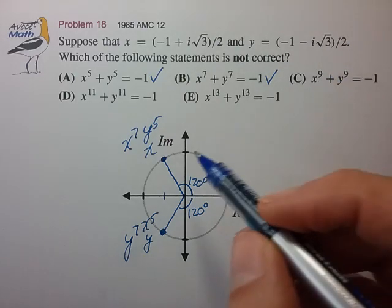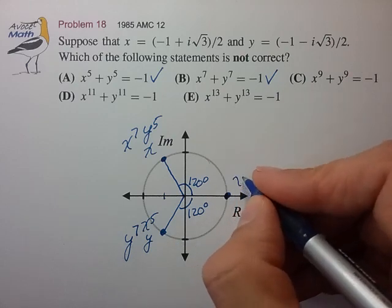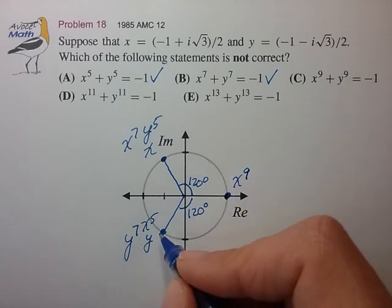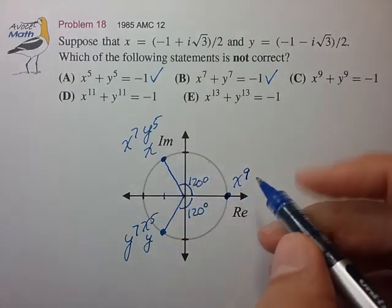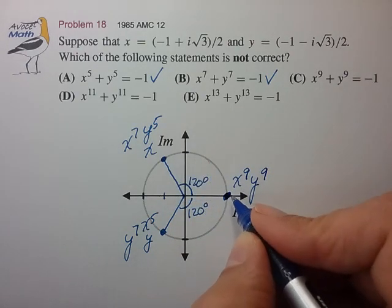x to the ninth. We have to go two more steps. x to the seventh. x to the eighth. x to the ninth. And likewise, y to the seventh. y to the eighth. y to the ninth.